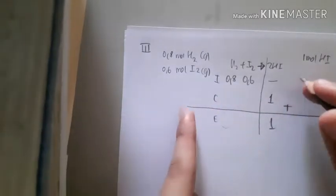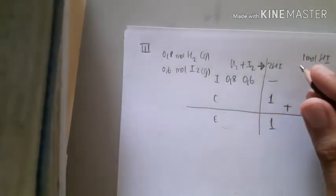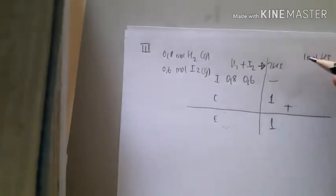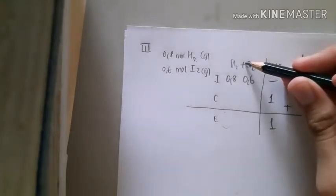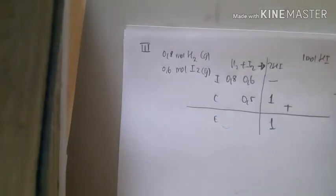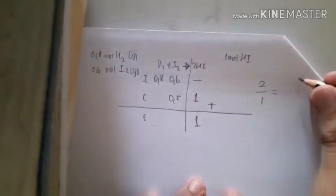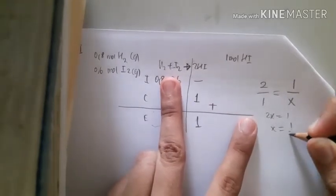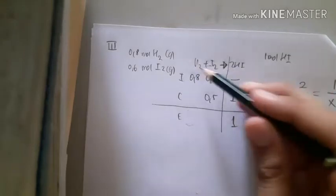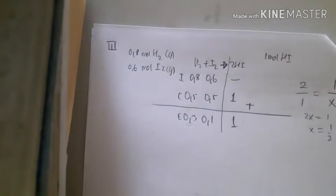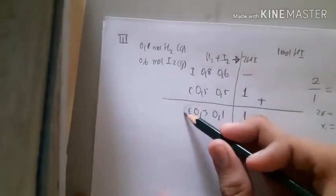The moles of hydrogen and iodine that react are based on the ratio of their coefficients. If 2 moles of HI coefficient gives 1 mole, then 1 coefficient gives 0.5. So if 2x = 1, then x = 0.5. Same ratio applies to both reactants: 0.5 for each. This gives 0.3 for H2 and 0.1 for I2 at equilibrium. The answer is 0.3 moles of hydrogen.